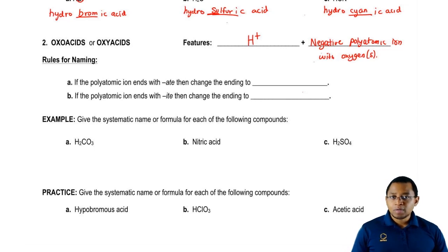What are the rules for naming these types of acids? We're going to say if the polyatomic ion that's involved in the oxy or oxo acid has -ate as the ending, then we're going to change that -ate ending to -ic acid.